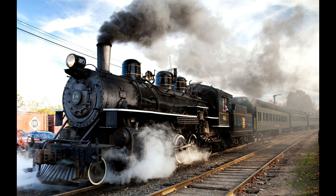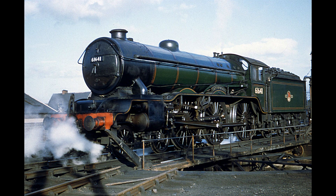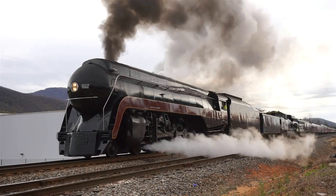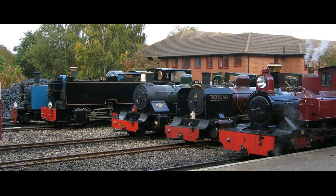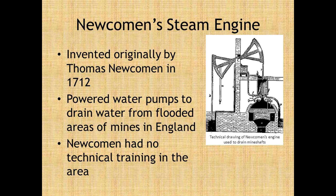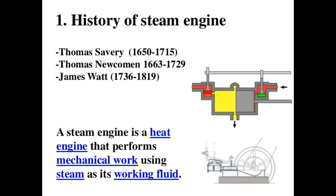How steam engines work. Steam engines were the first engine type to see widespread use. They were first invented by Thomas Newcomen in 1705, and James Watt — whose name we remember each time we talk about 60-watt light bulbs — made big improvements to the steam engine in 1769. Steam engines powered early locomotives, steamboats, and factories, acting as a foundation of the industrial revolution.